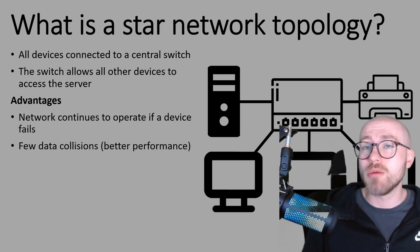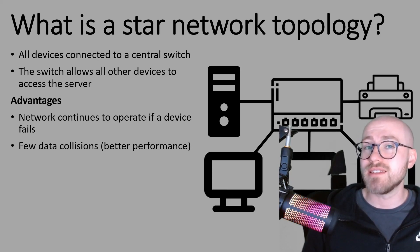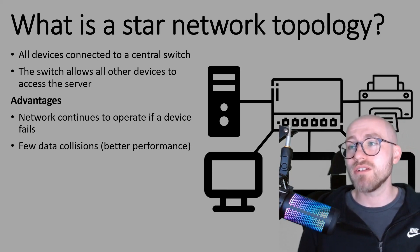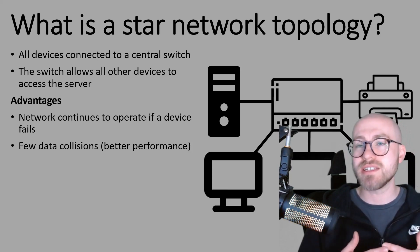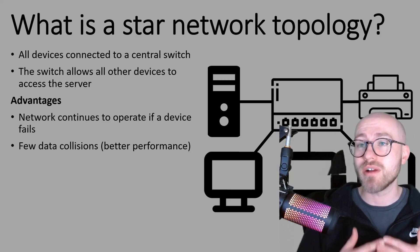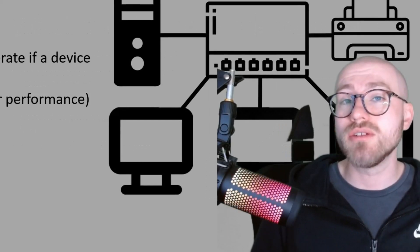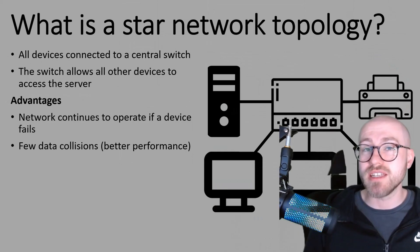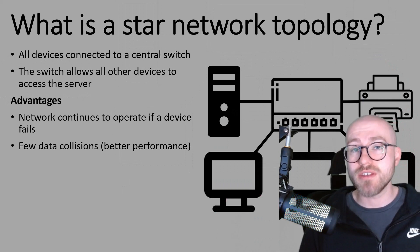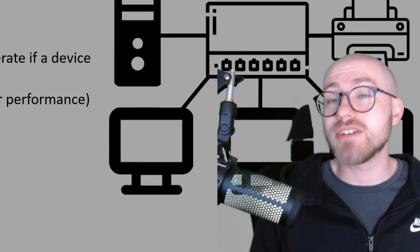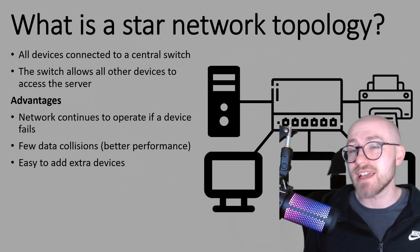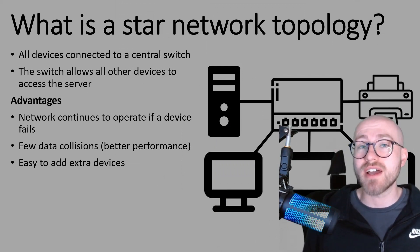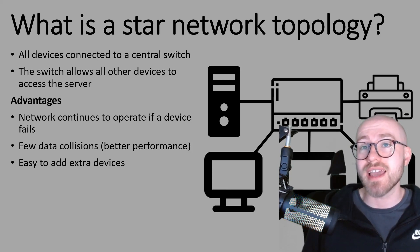The star topology has really good performance because the switch is a clever piece of network hardware — there are very few, if not zero, data collisions. Data collisions occur when you're sending data at the same time as somebody else, which slows down the network significantly. Because data goes directly to where it needs to go via the switch, you'll have very few collisions. It's also a lot easier to add extra devices — this is called scalability — so it's easily scalable.